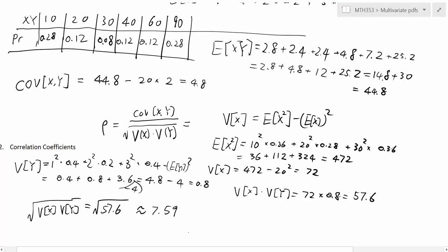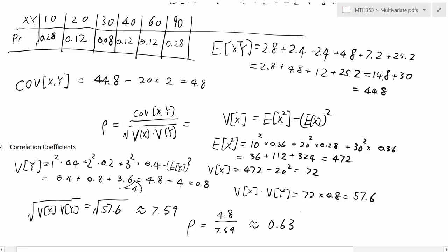The correlation coefficient is the covariance divided by the square root of the product of the variances — so 4.8 divided by 7.59, which is approximately 0.63. That's how we calculate covariance and correlation coefficients.